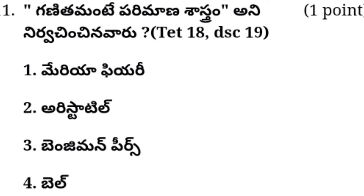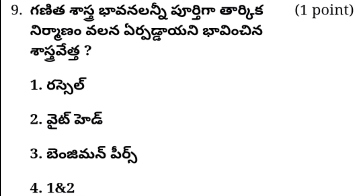I will give you a course in 40 definitions. Option 1: Russell. Option 2: Whitehead. Option 3: Benjamin Pierce. Option 4: 1 and 2. Answer in the comments box. The answer is option 4 — 1 and 2 — Russell and Whitehead.